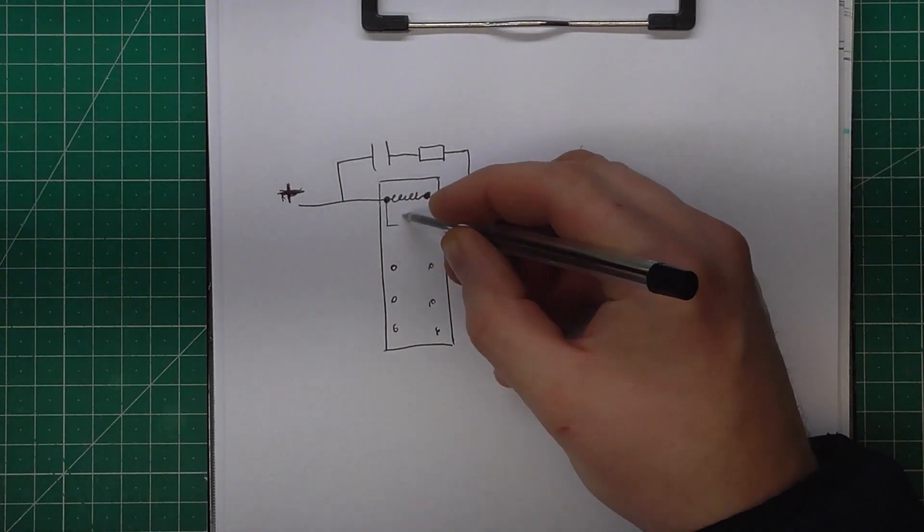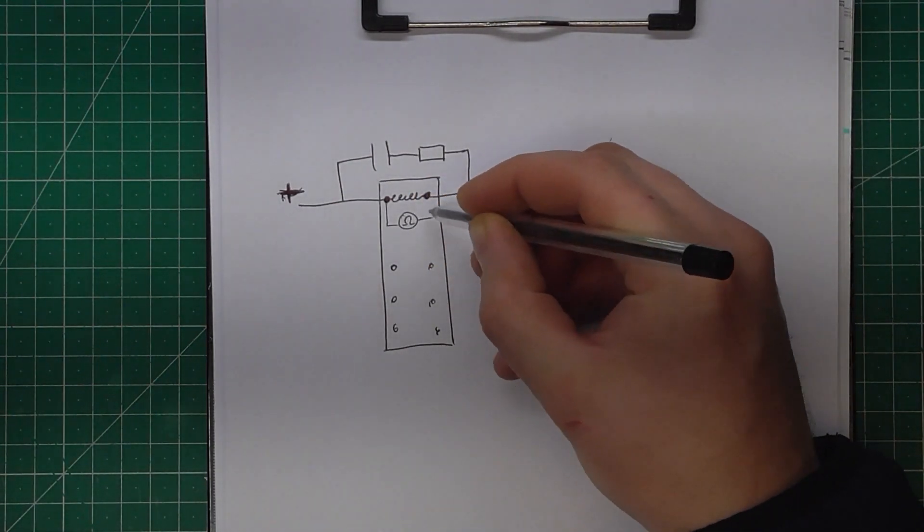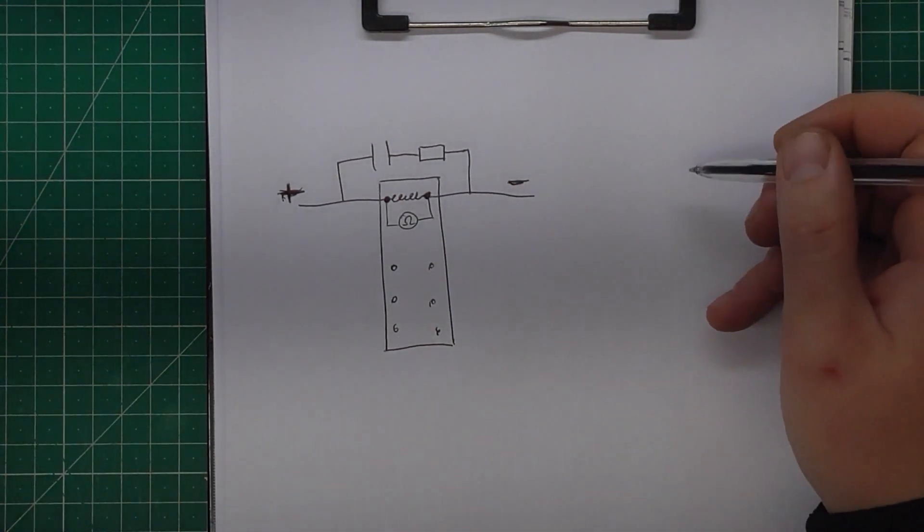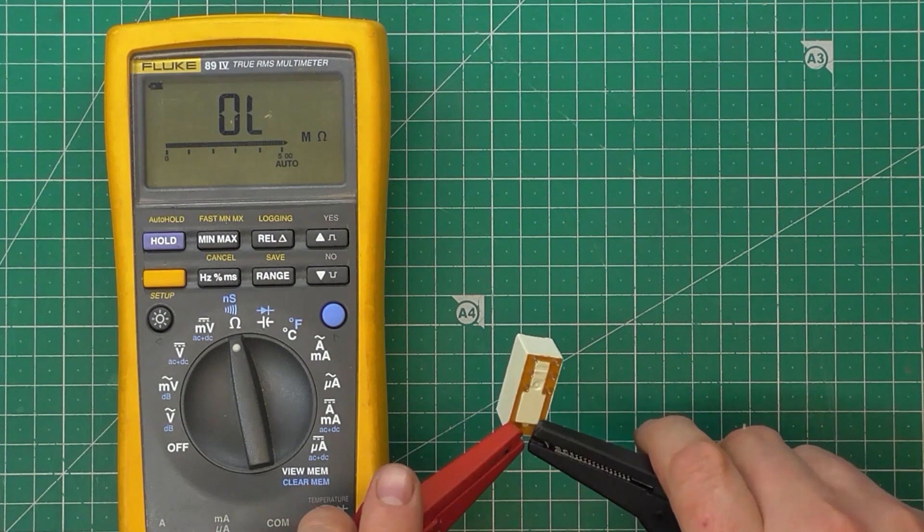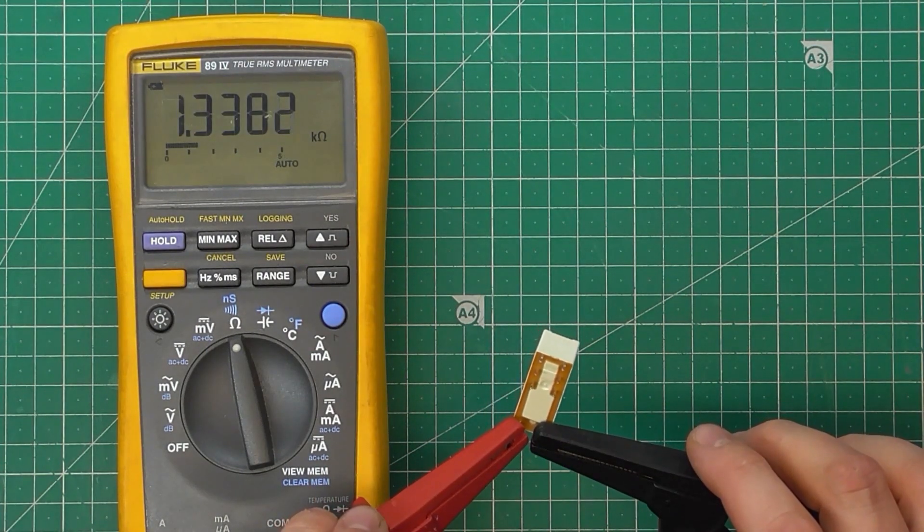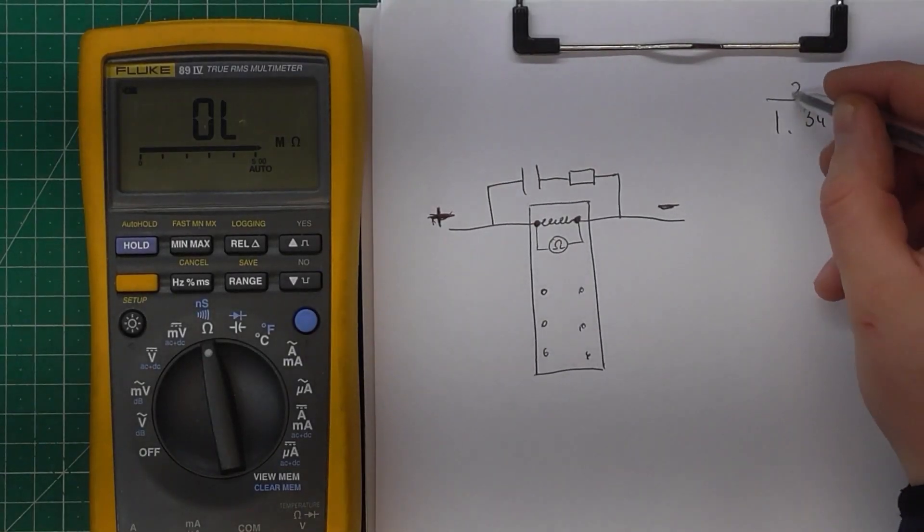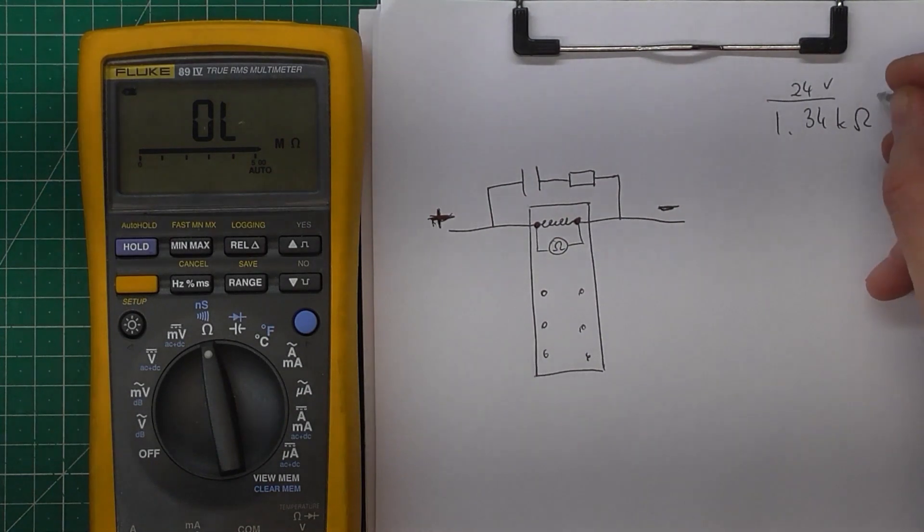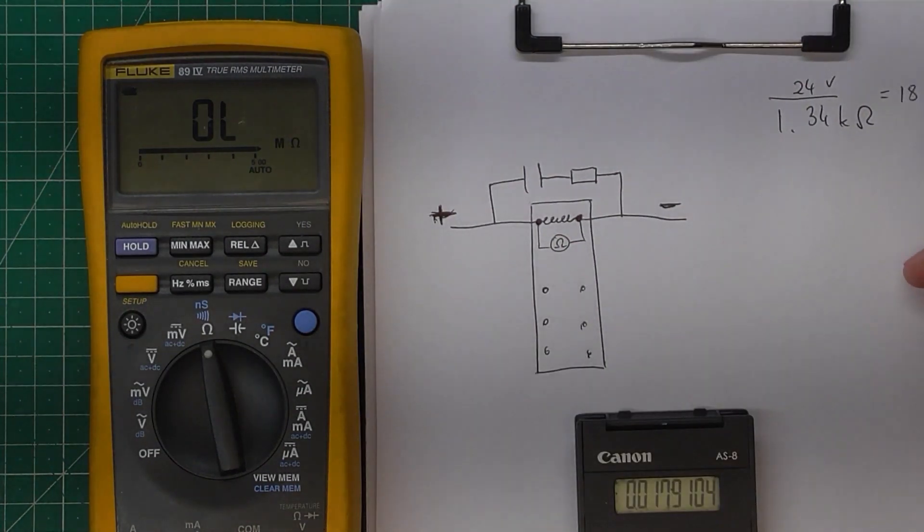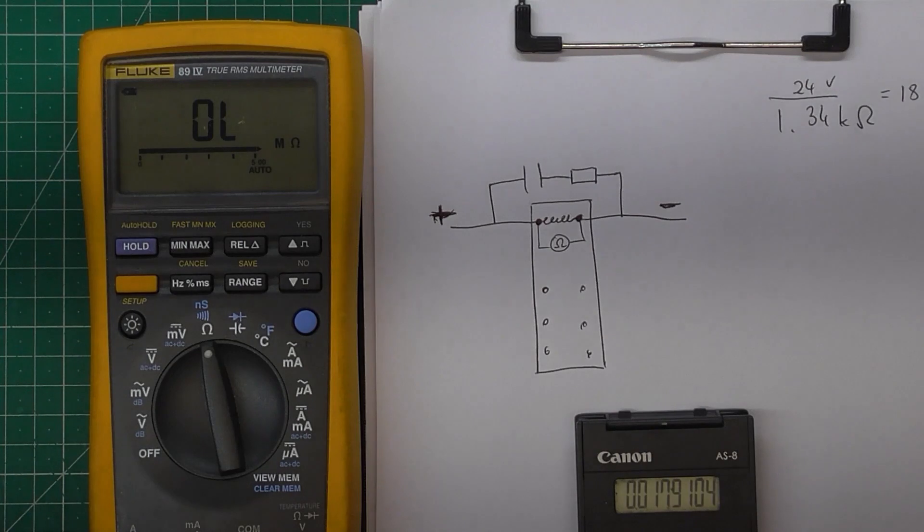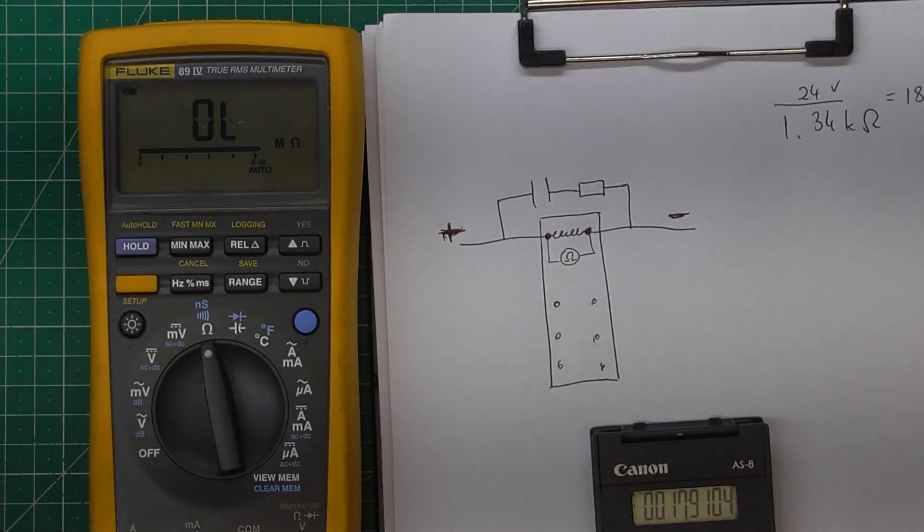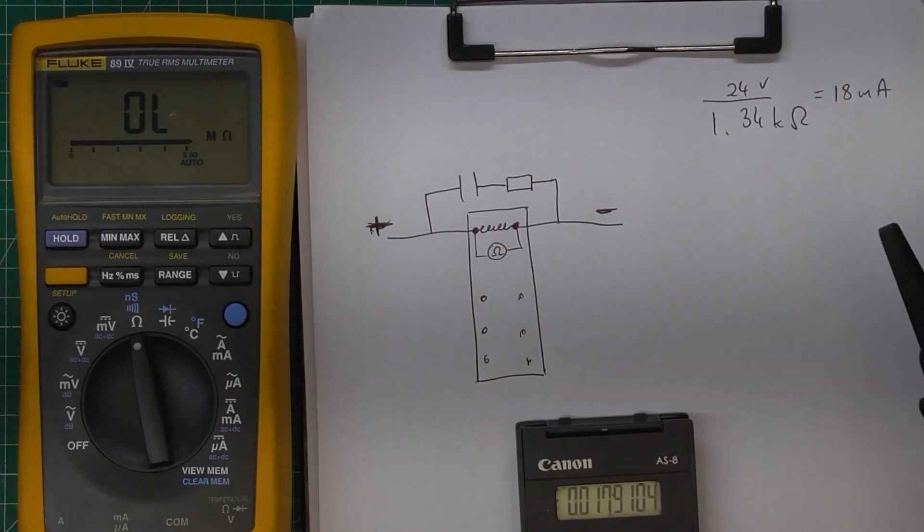We can physically check this by connecting the relay to 24 volts and connecting the multimeter through the circuit. As we see, there's almost 18 milliamps, so everything is exactly the same as we calculated. This is quite important for small microcontrollers, even for small Arduinos, where the currents from the microcontroller are very low and sometimes it's not enough to power up the relay coil.